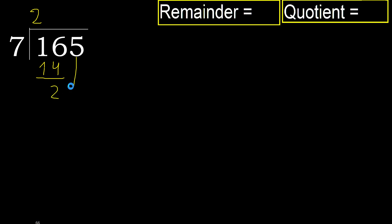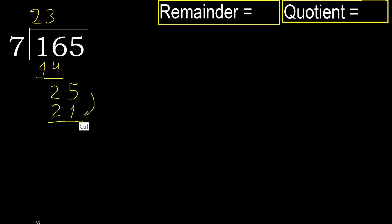Next: 25. 7 multiplied by 4 is greater. Multiply by 3: 21 is not greater. Subtract. Next.